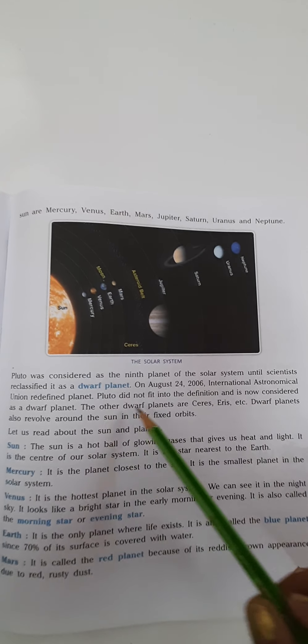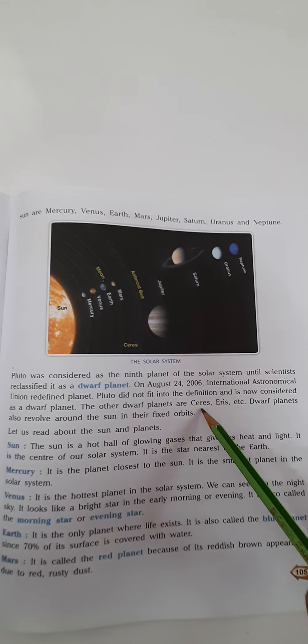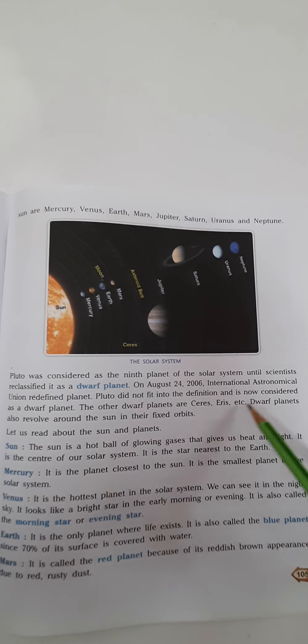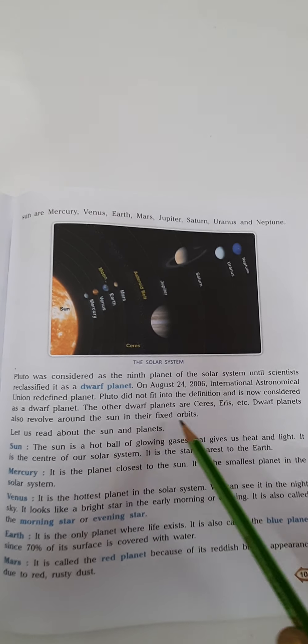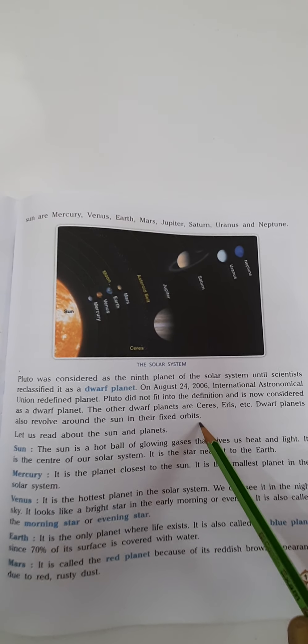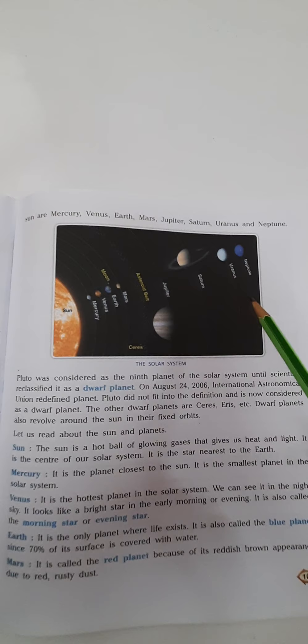The other dwarf planets are Ceres, Eris, etc. Dwarf planets also revolve around the sun in their fixed orbitals, but they are not considered as the other planets.